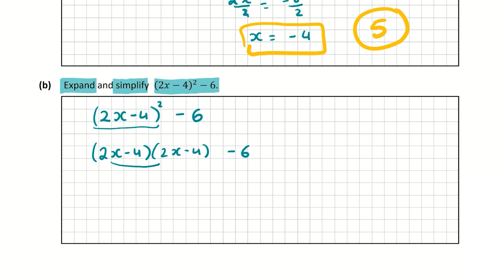Now we multiply these. So 2x multiplied by 2x is 4x². 2x by minus 4 is minus 8x. And then minus 4 by 2x is again minus 8x. And minus 4 by minus 4 is plus 16. And then we have minus 6. So now I'm just going to group together like terms.